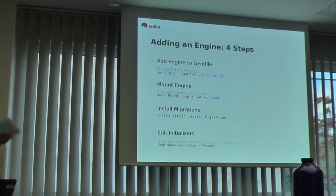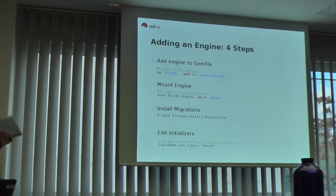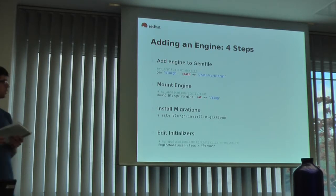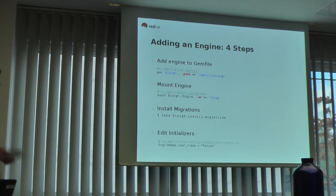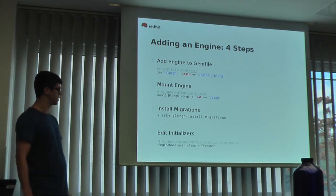There are essentially four steps to add an engine to your host application. First, load the engine in your Gemfile. Then mount it at a particular path. Run 'rake railties:install:migrations' — prefixed with the engine name — which copies all migrations into the host application. And finally, handle any initialisation you need to do.